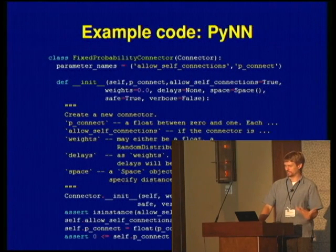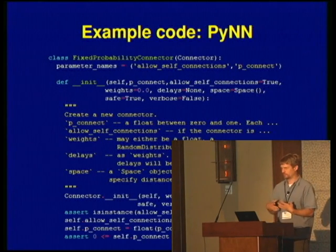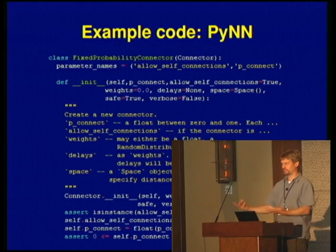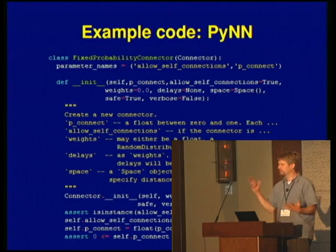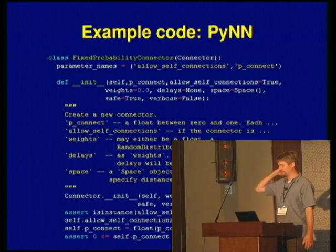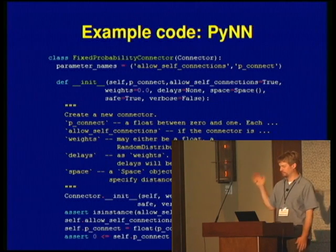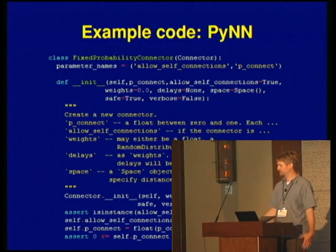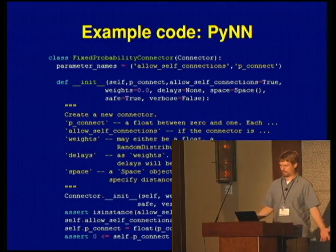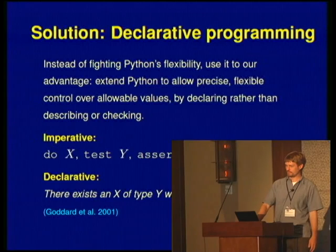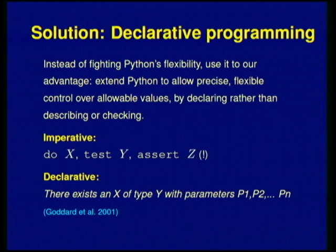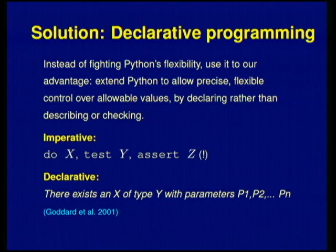So what should you do, if you actually care about writing code you want to give to a student or collaborator and you want it to work — you don't want some mysterious error where something was truncated, meant to be a float but treated as an integer? I would argue that the solution is declarative programming. Instead of trying to fight Python's flexibility, instead of trying to patch it at every moment, use Python's flexibility to extend Python and allow precise and flexible control — rather than detecting problems later, control them at the very start.